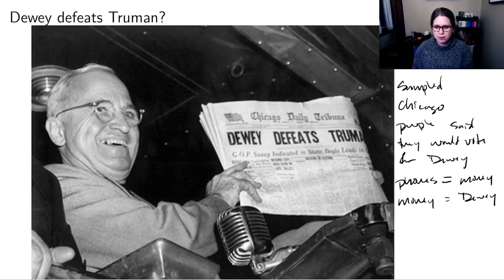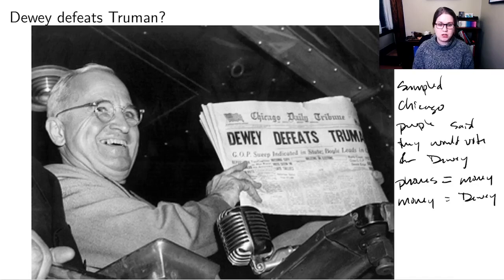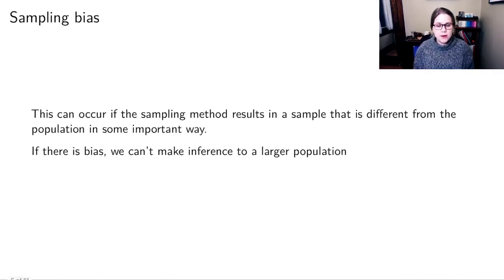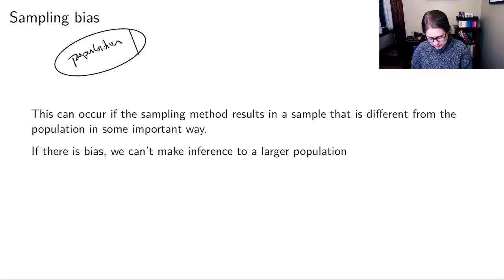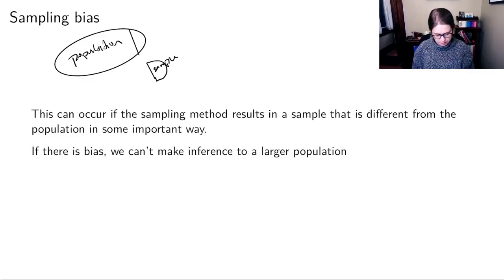We've seen sampling bias in polling with recent presidential elections as well, though there isn't as neat an explanation as people just being called by telephone. Anytime we end up with a sample that is different from the population — where the sample doesn't look like a mini version of the population, but rather an unrepresentative piece of it — that's sampling bias. If there's bias, we can't make inference about the whole population because our sample wasn't representative.